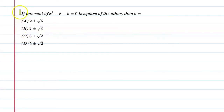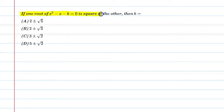Hello students, let's solve this question. If one root of x squared minus x minus k equal to 0 is square of the other, then k is equal to?